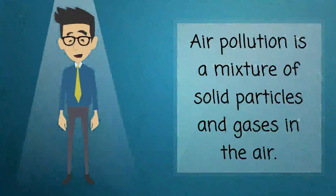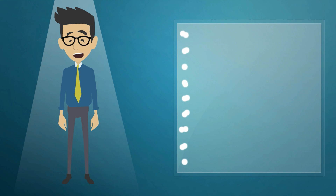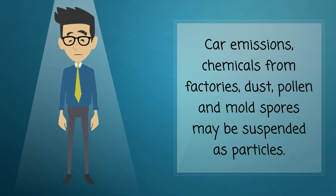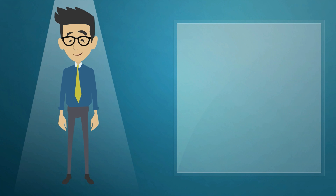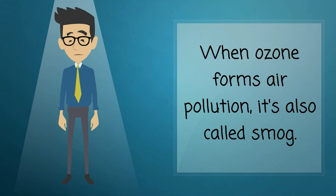Air pollution is a mixture of solid particles and gases in the air. Car emissions, chemicals from factories, dust, pollen, and mold spores may be suspended as particles. Ozone, a gas, is a major part of air pollution in cities. When ozone forms air pollution, it's also called smog.